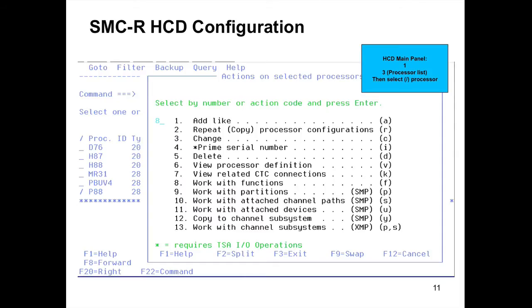Here are screenshots from our shop going through the hardware configuration definition to add a new RoCE card. From the HCD main panel, select option 1, then option 3 (the processor list), select the processor, and choose option 8 — work with functions — and hit Enter. On the next page you can see I already had eight RoCE Express adapters defined with PFID IDs 1 through 8. Remember those PFIDs — they'll correlate to the TCP stack configuration. The PCHID value and type (RoCE Express adapter) are also shown.